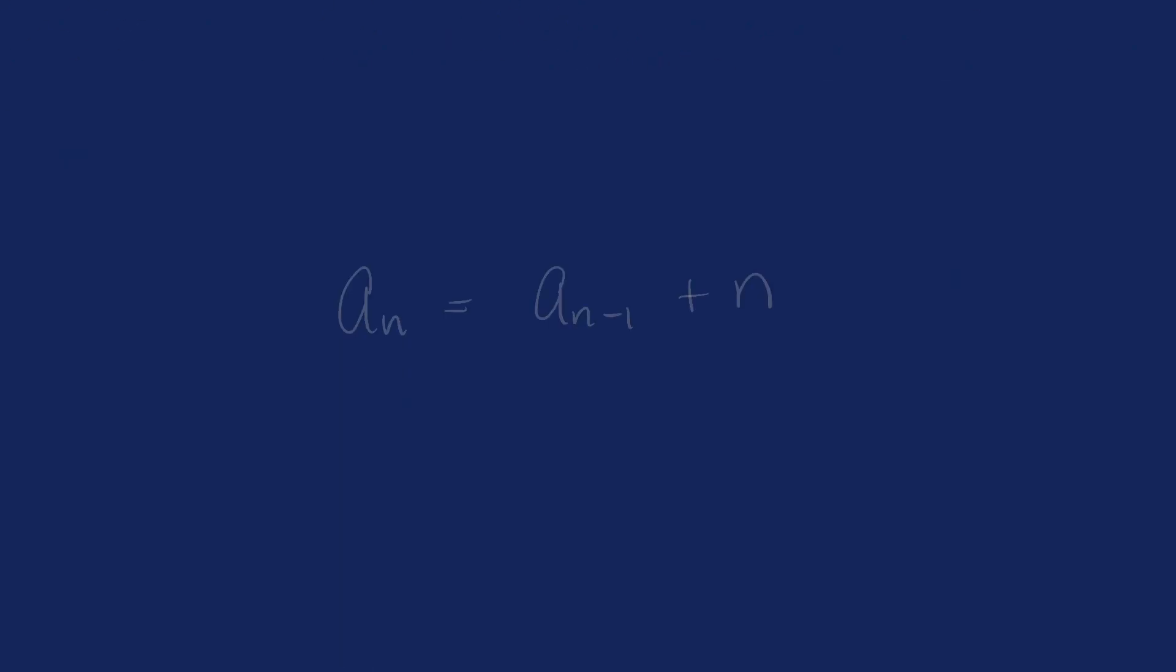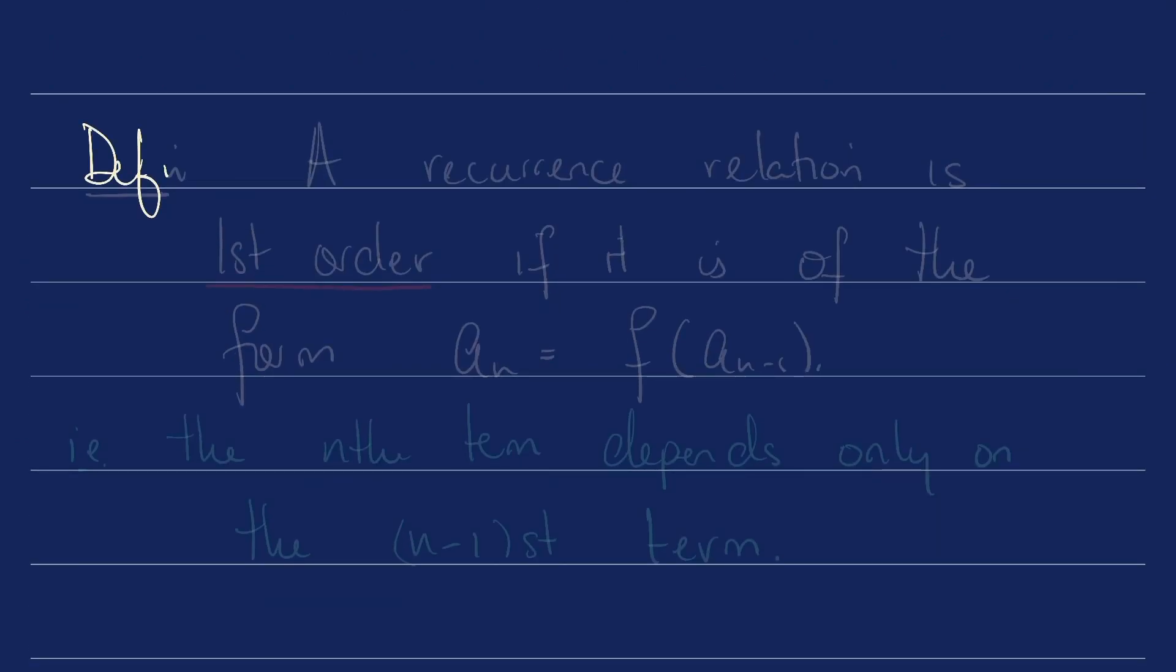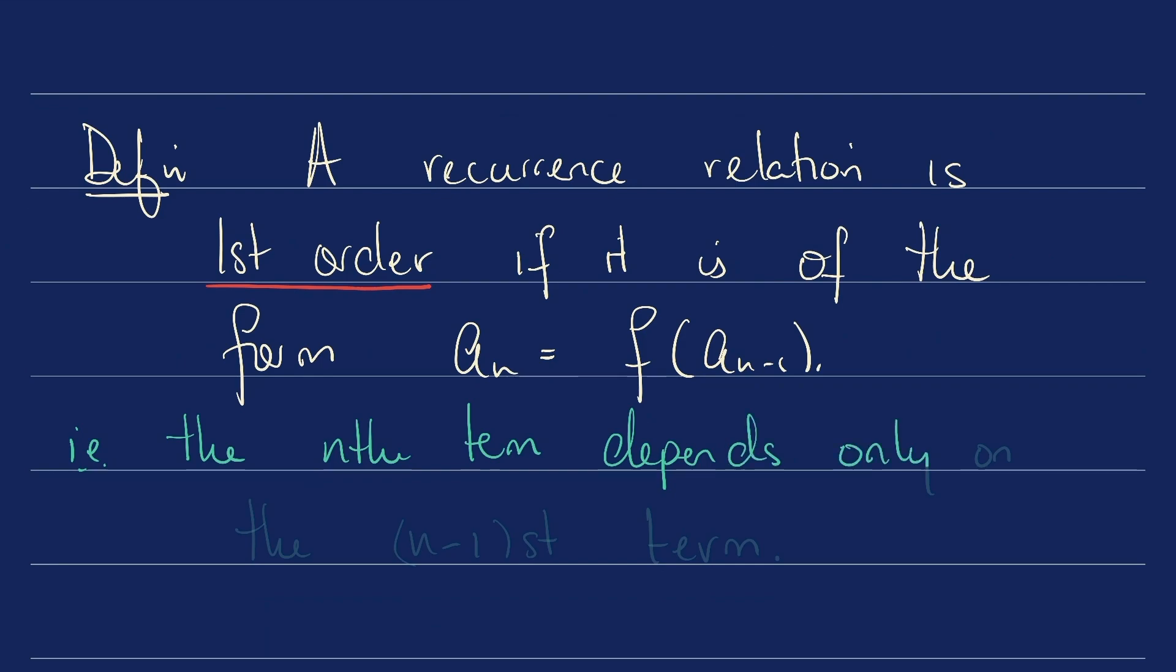Altogether, a_n is going to be a_(n-1) plus n. Definition. A recurrence relation is first order if it is of the form a_n = some function of a_(n-1). That is, the nth term depends only on the (n-1)st term.